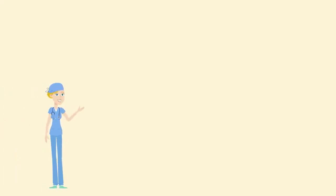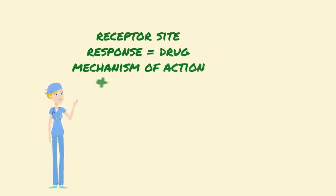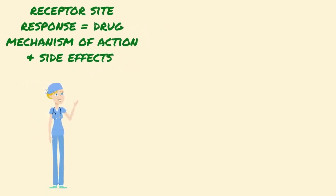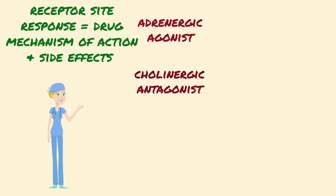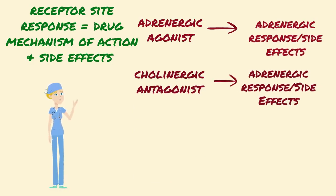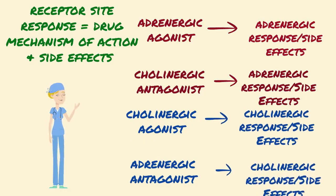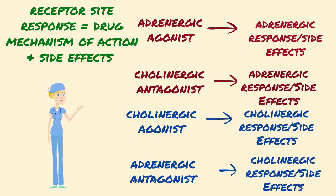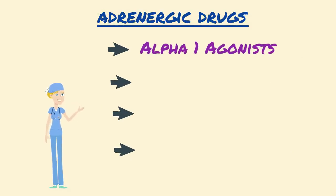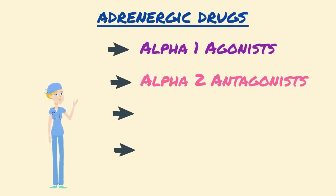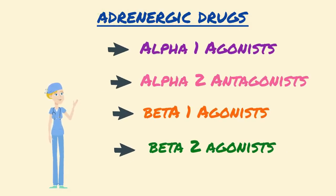Summarizing receptor site responses and connecting that to each drug category's mechanism of action and possible side effects: adrenergic agonist and cholinergic antagonist drugs will yield adrenergic responses and side effects, whereas cholinergic agonist and adrenergic antagonist drugs will lead to cholinergic responses and side effects. Now let's review each drug category which optimizes these receptor sites for its adrenergic effects.